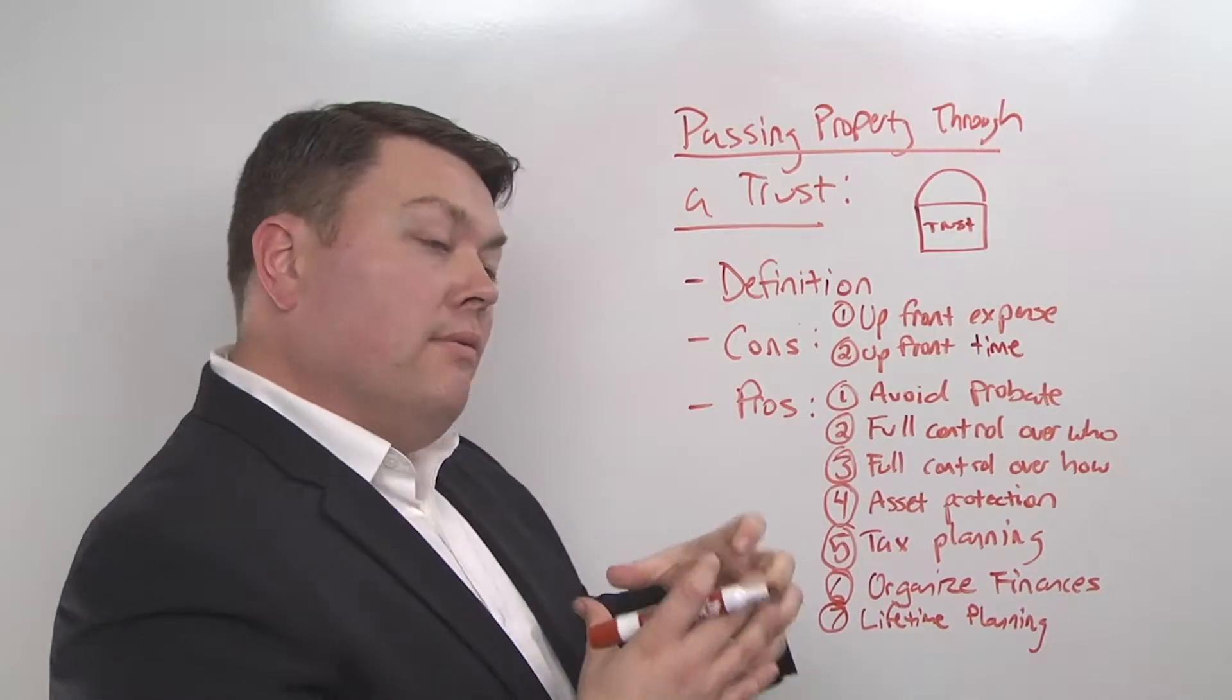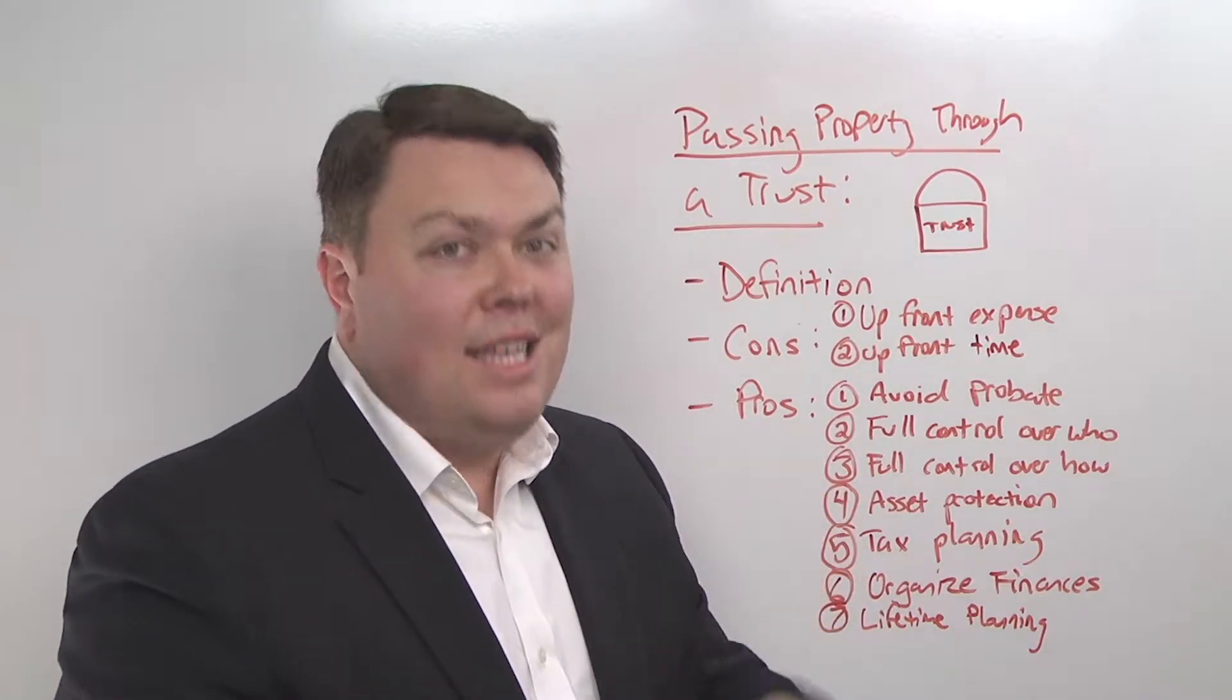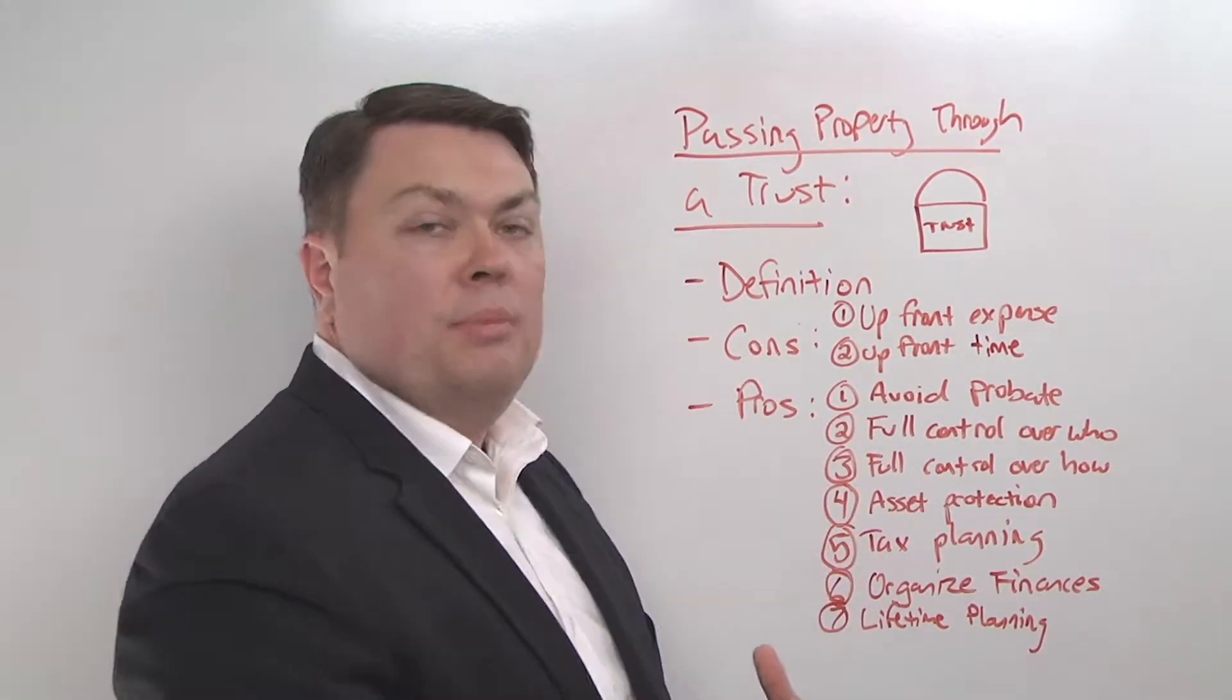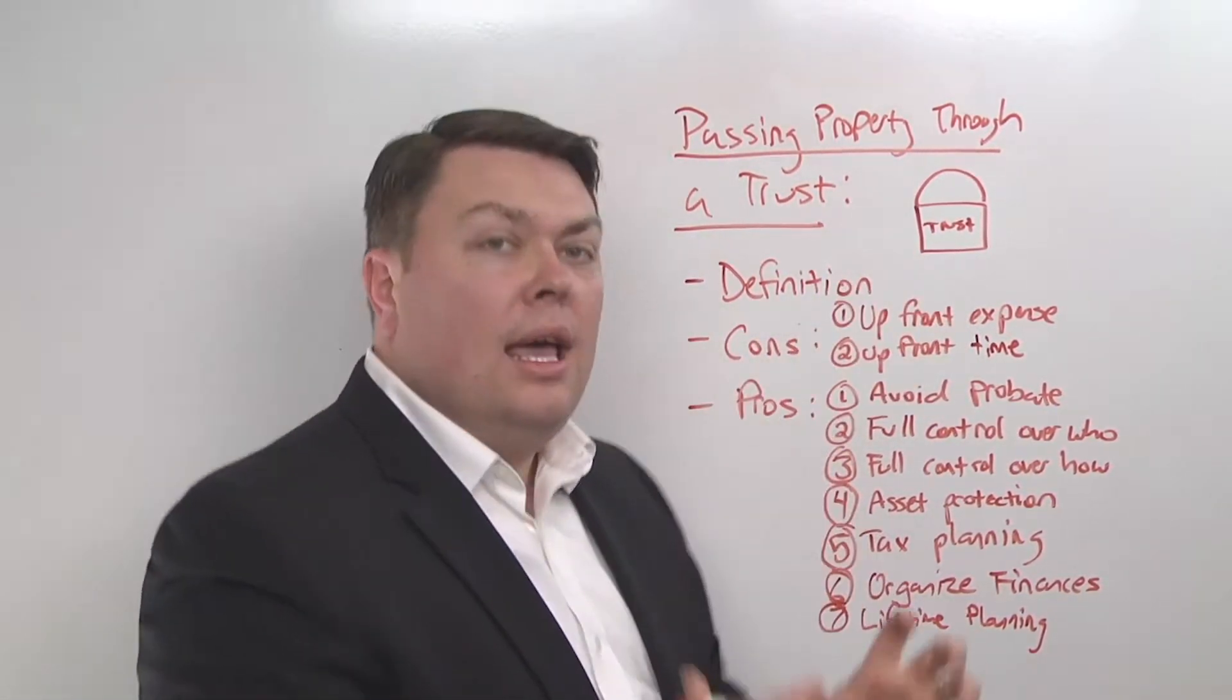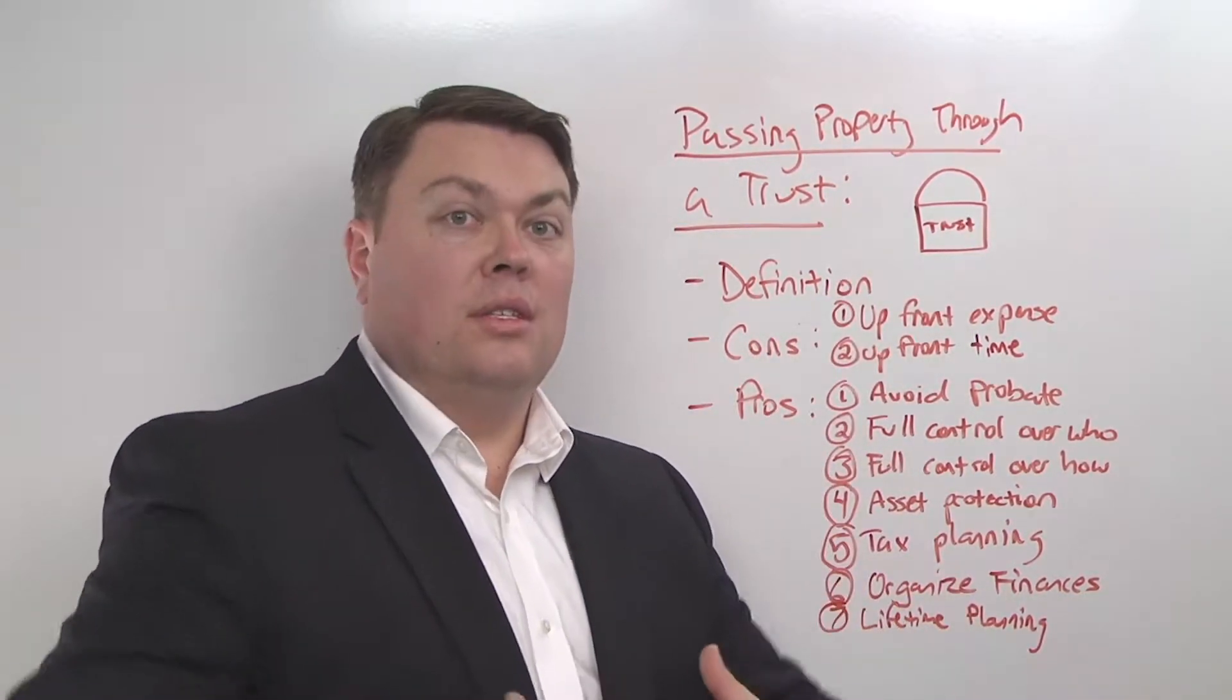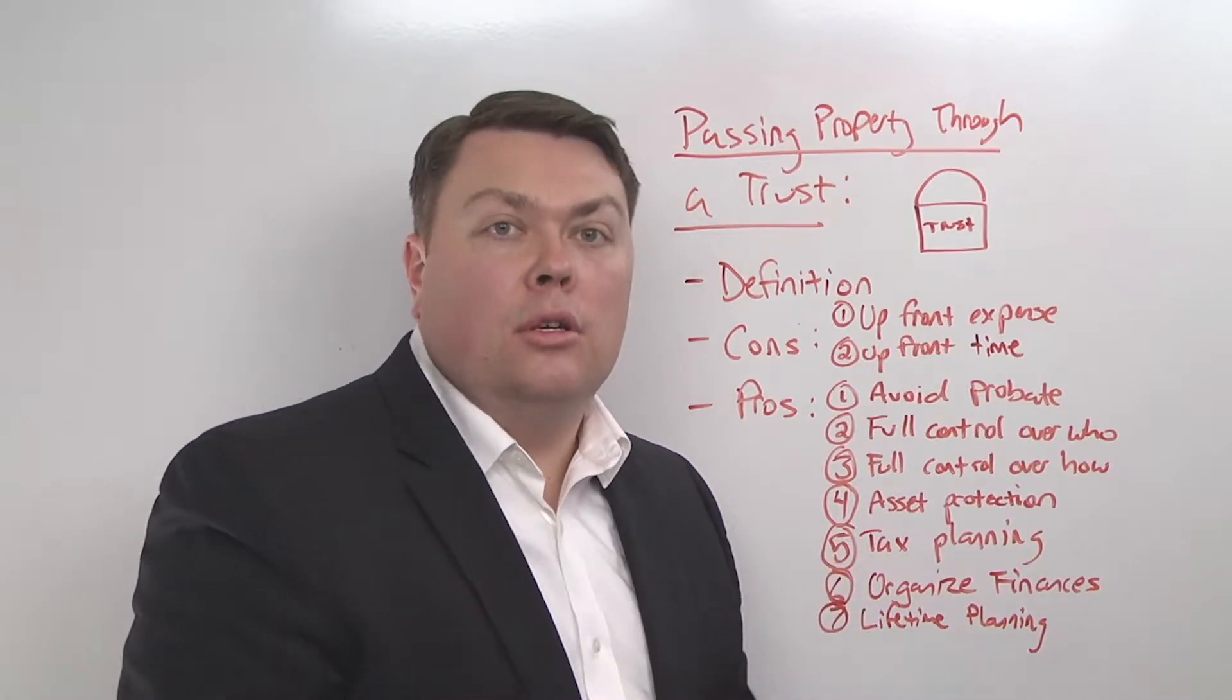A trust doesn't have to go through any of that because the trust is the actual owner of the property. You actually transfer title to your property into the name of the trust, and you are the boss of the trust, also known as the trustee. So you as the trustee hold that bucket, you control the property within that trust bucket, and you have terms within that trust document that tell the successor trustees how they're supposed to control the property when you can no longer control it yourself.